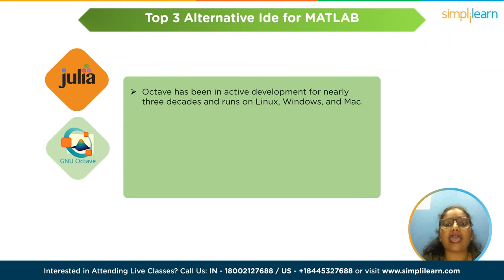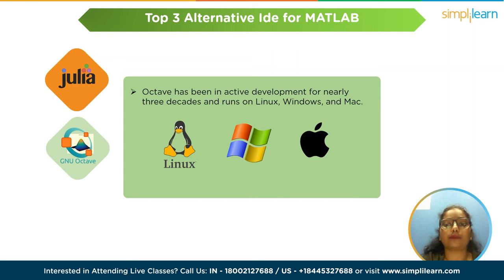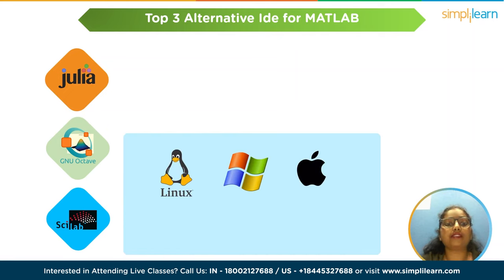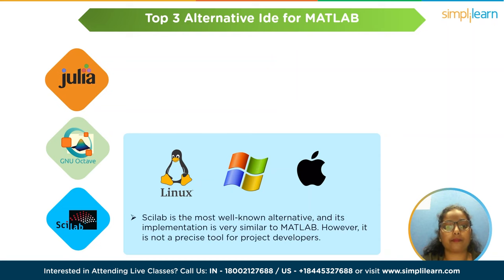The second alternative is Octave. Octave is the most well-known alternative for MATLAB; it has been actively developed for nearly three decades and runs on Linux, Windows, and Mac. If you are looking for a project that is as close as possible to the existing MATLAB language, Octave is a good fit. The third one is Scilab, an open-source numerical computing option that primarily runs on Windows, Mac, and Linux. Scilab's implementation is very similar to MATLAB; however, it is not a precise tool for project developers.